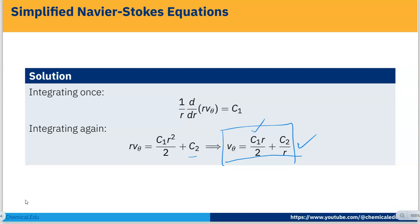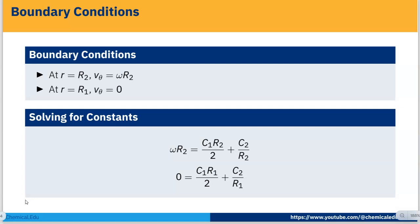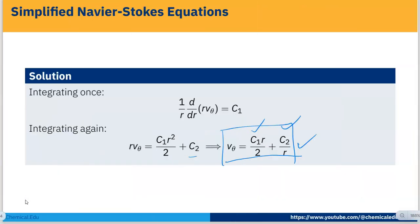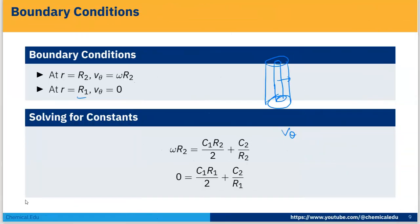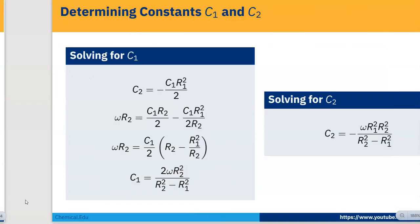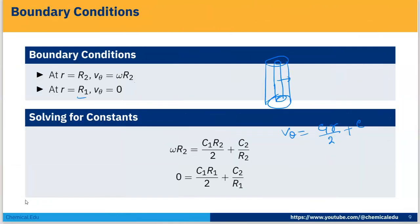We apply boundary conditions based on the cylinder conditions: the outer cylinder is rotating and the inner cylinder is stationary. At r = R₂ (outer cylinder radius), v_θ = ω·R₂ since the outer cylinder rotates. At r = R₁ (inner cylinder radius), v_θ = 0 since the inner cylinder is stationary. Substituting into v_θ = C₁·r/2 + C₂/r gives two equations.